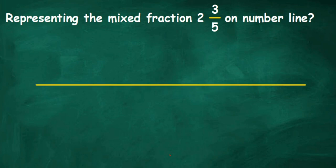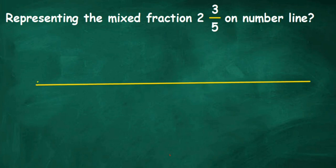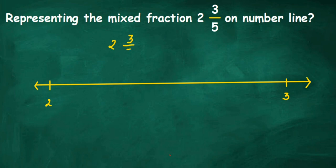So on this number line, we have 2 and 3, and between 2 and 3 we are going to mark 5 equal parts. Why 5 equal parts? Because the denominator here is 5. If the denominator were 7, you'd make 7 equal parts; if 10, then 10 equal parts. So between 2 and 3, I'm making 5 equal parts: 1, 2, 3, 4, and 5.